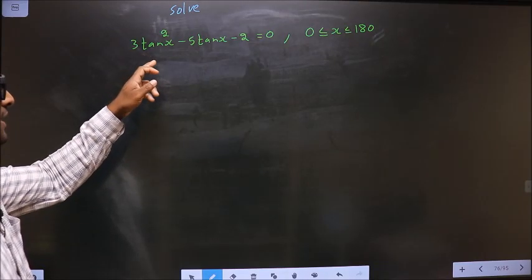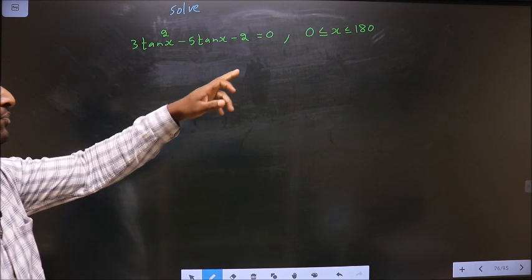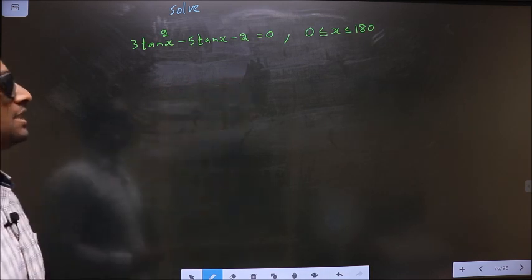Solve 3 tan squared x minus 5 tan x minus 2 equal to 0, where x lies in the interval 0 to 180.